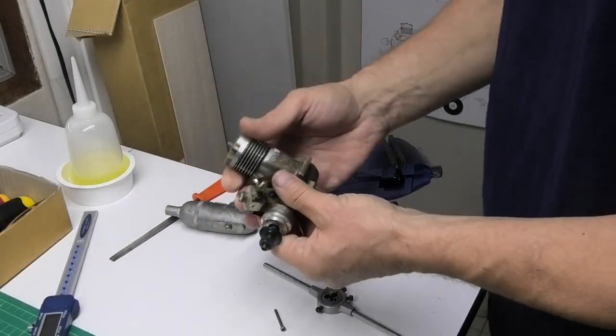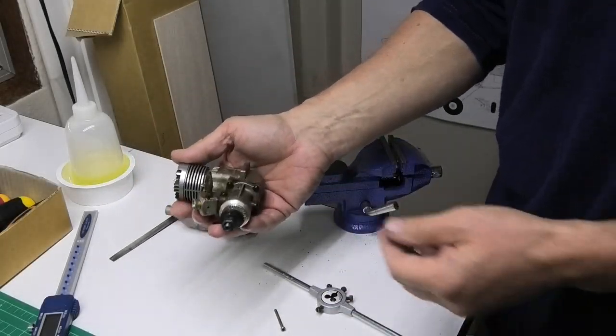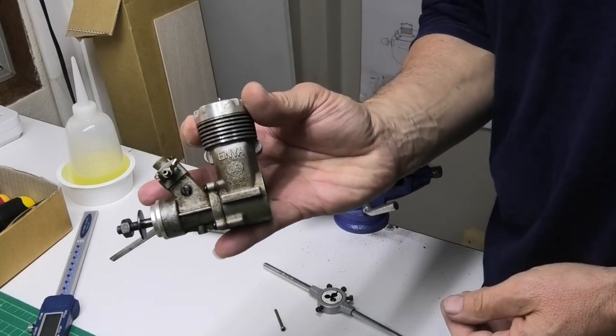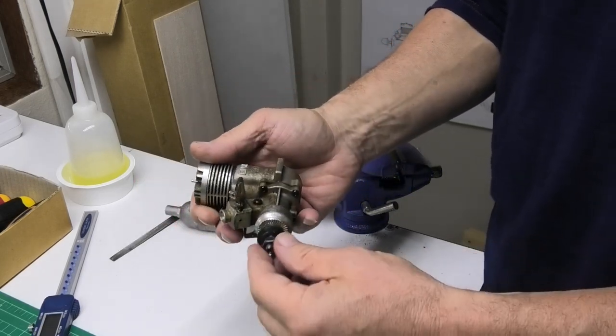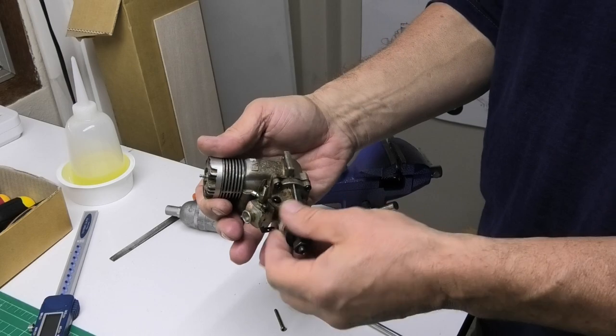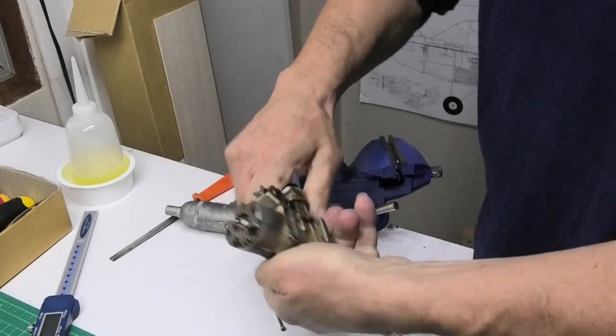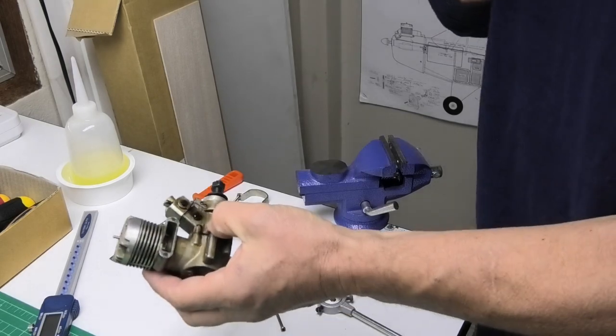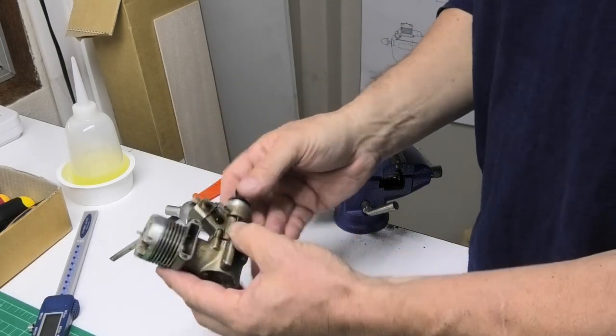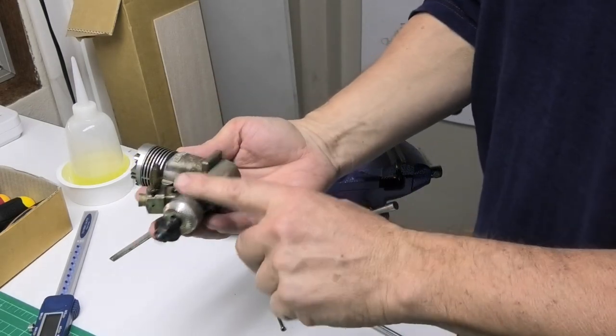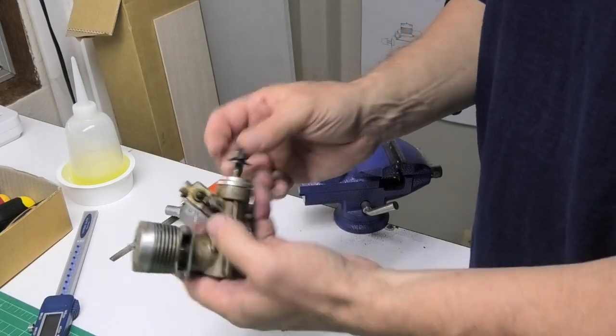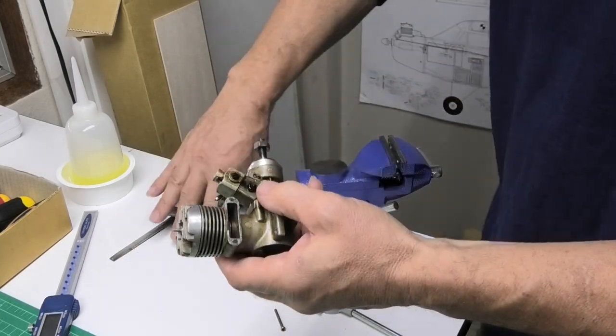Hi, I recently bought this lovely old Japanese engine, an Enya 35. Lovely smooth bearings, heaps of compression, just a lovely engine at a very reasonable price. It needs a little bit of cleaning up, but I'm sure this engine is going to run really sweet.